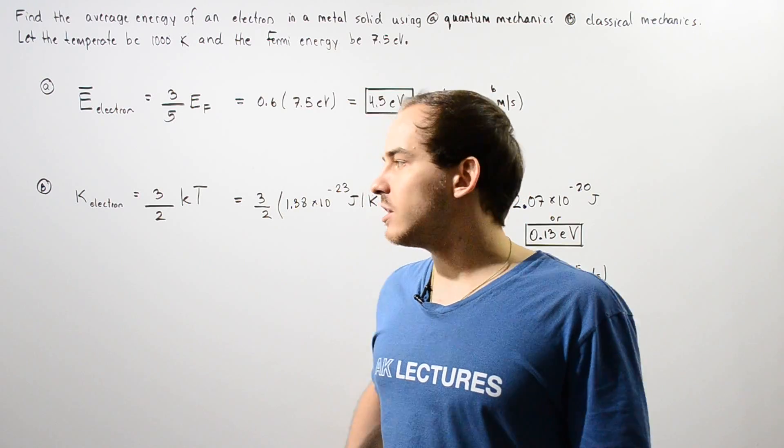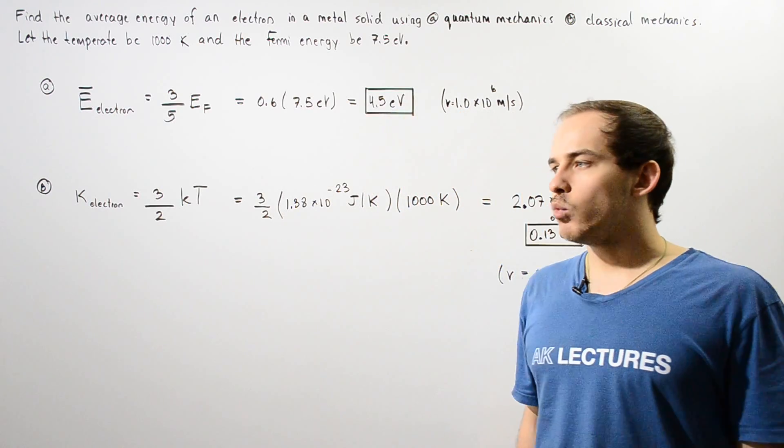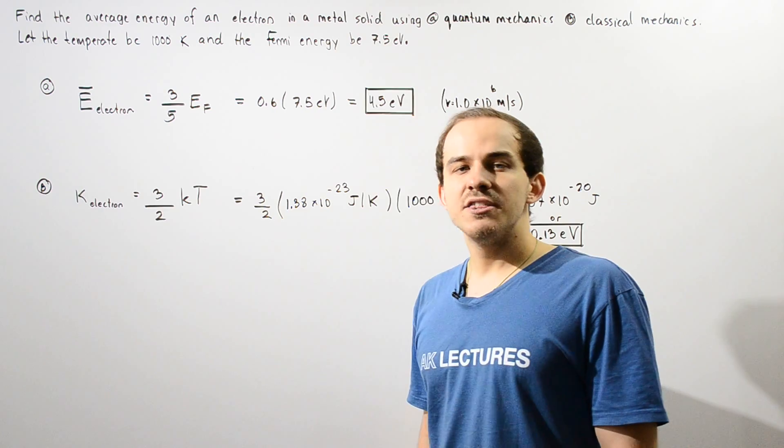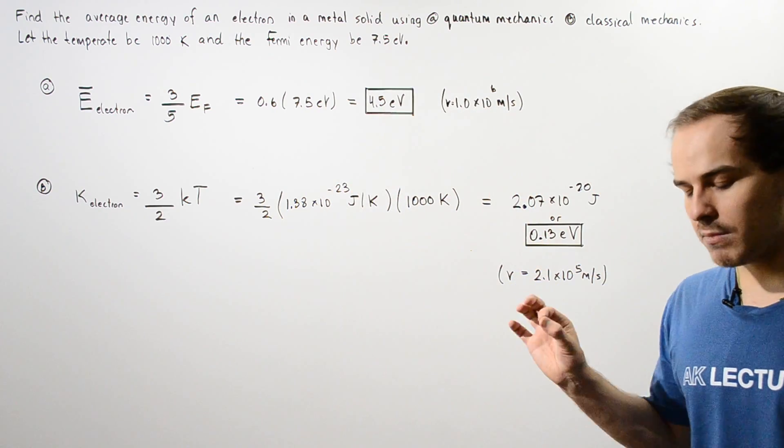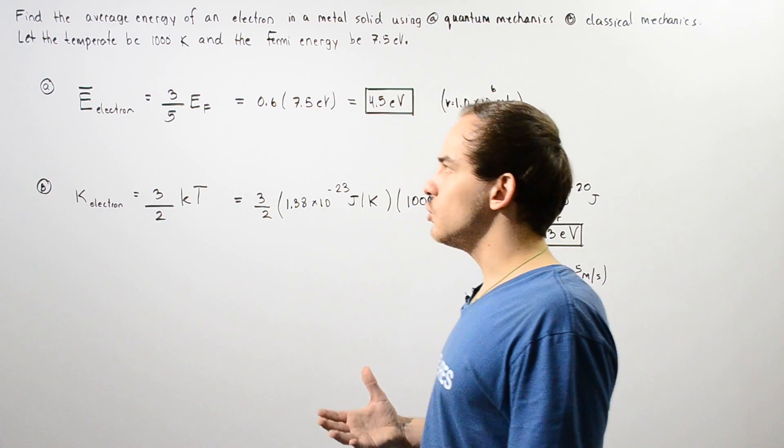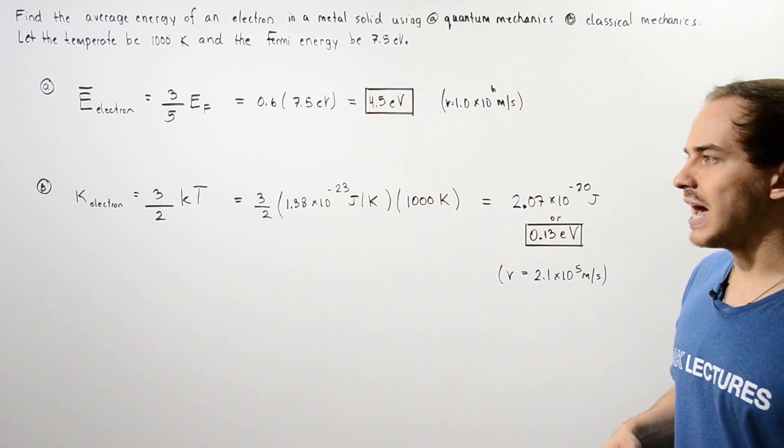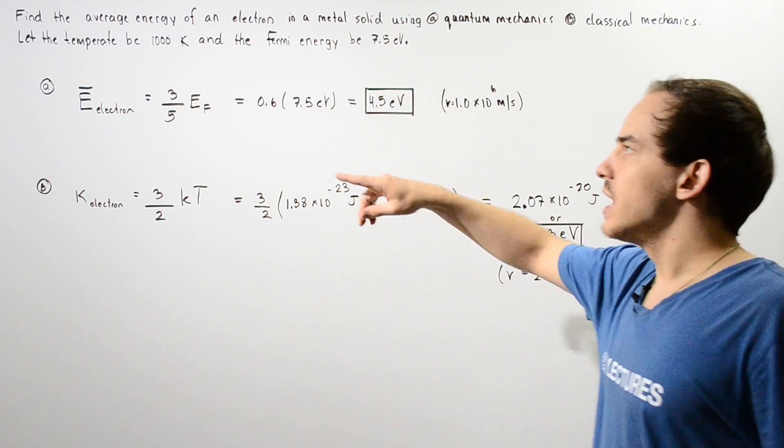Let's take a look at the following example in which we're going to calculate the average energy of an electron found inside a metal solid by first using quantum mechanics and then taking the classical mechanics approach.